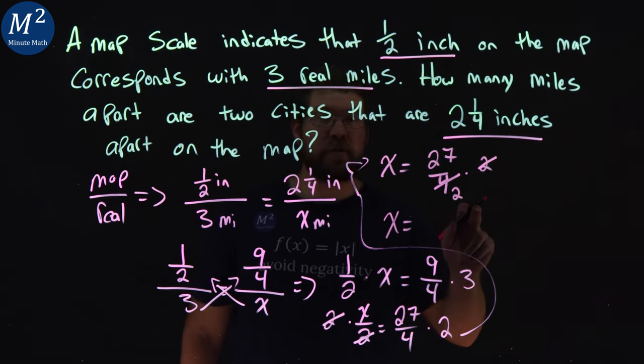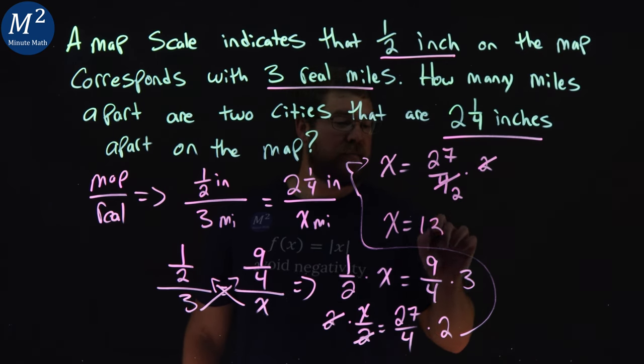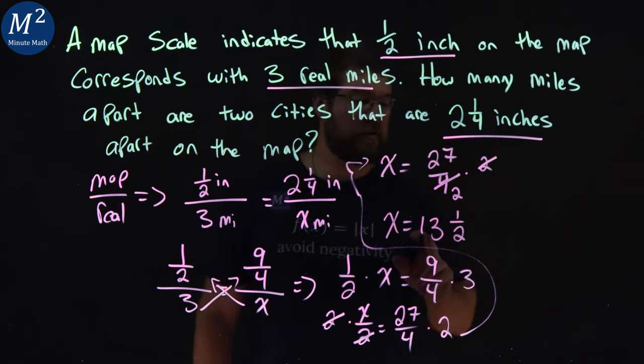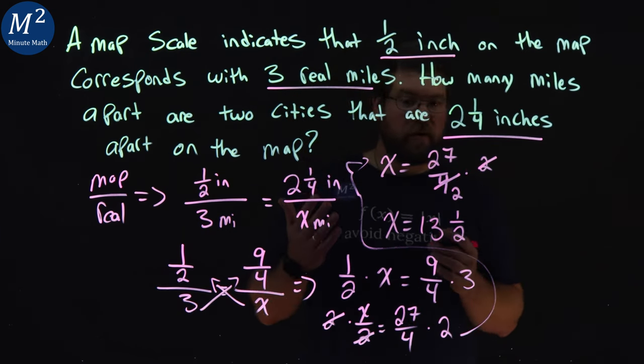And twenty-seven over two as a proper fraction would be thirteen and one half. Two goes into twenty-seven would be twenty-six is thirteen plus the extra half. There's our conversion here.